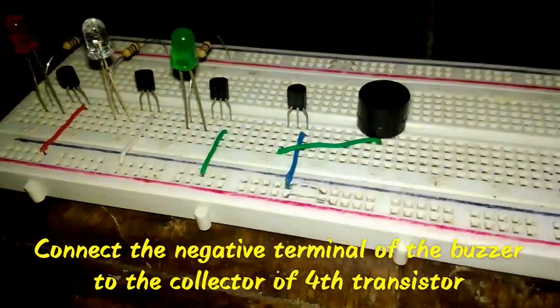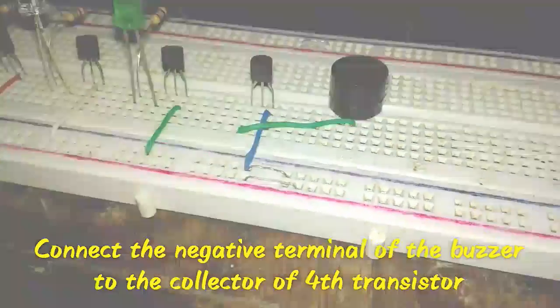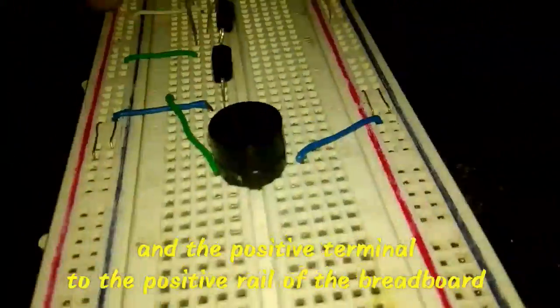Connect the negative terminal of the buzzer to the collector of the fourth transistor and the positive terminal to the positive rail of the breadboard.